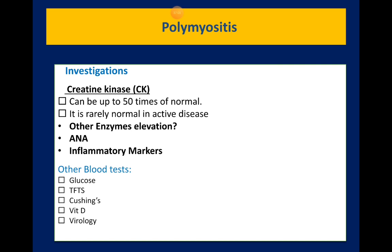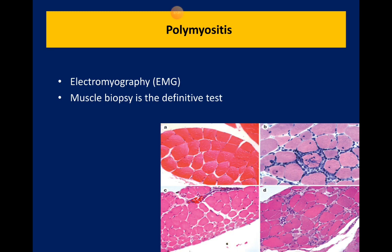Other blood tests aim at ruling out conditions that can mimic or cause myopathy, such as thyroid disease, Cushing's, significant vitamin D deficiency, and viremia. EMG is usually confirmatory. Muscle biopsy is the definitive test — in practice, it is performed after an MRI scan which confirms the presence of involved muscles with edema and inflammation and identifies the best anatomical site for biopsy.